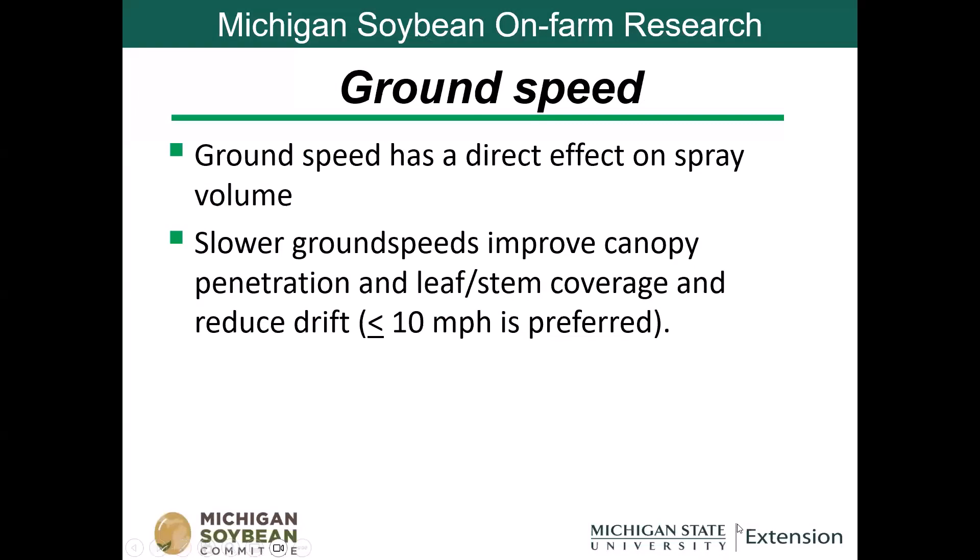Ground speed is really important because there's an inverse relationship. If we double our ground speed, we cut our volume in half. If we decrease our ground speed, we double our volume. We don't want to drive too fast because that doesn't let the droplets penetrate the canopy as much. Try to keep your ground speed at 10 miles per hour or less in large soybean canopies.